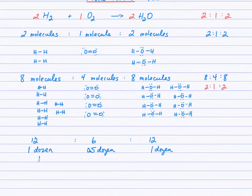Six is half a dozen, and 12 is one dozen. So I have 1:0.5:1, which is also a ratio of 2:1:2. We see this consistent 2:1:2 ratio showing up in all these examples.